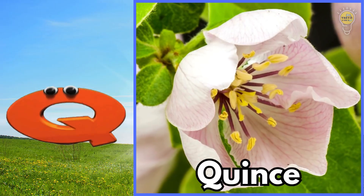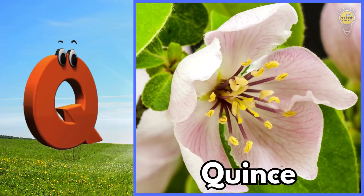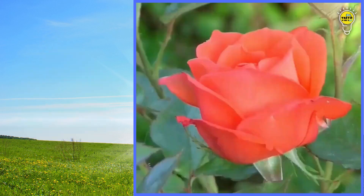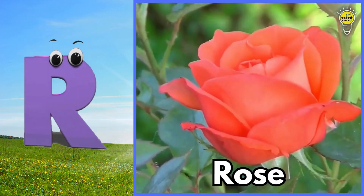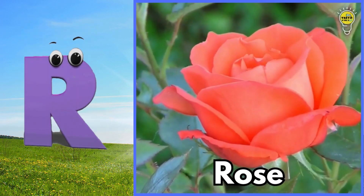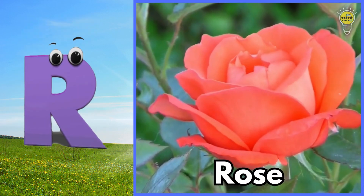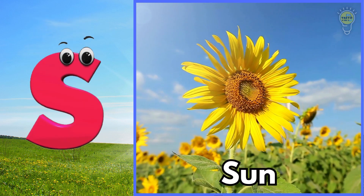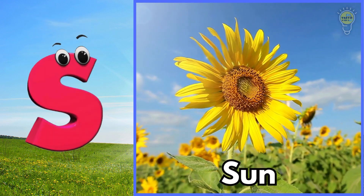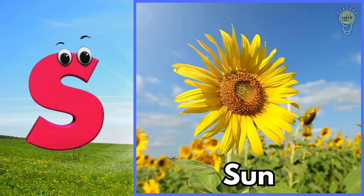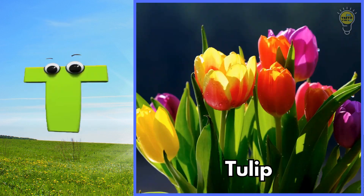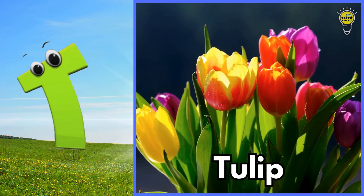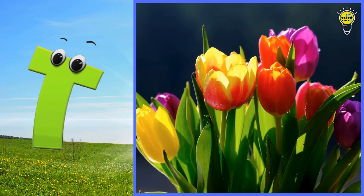Q is for quince flower, quince flower. R is for rose flower, rose flower. S is for sunflower, sunflower. T is for tulip flower, tulip flower.